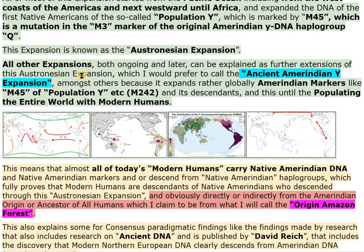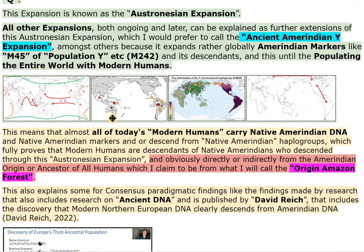All other expansions, both ongoing and later, can be explained as further extensions of this Austronesian Expansion, which I would prefer to call the Ancient Amerindian Y Expansion — amongst others, because it expands rather globally Amerindian markers like M45 of Population Y, M242, and its descendants, populating the entire world with modern humans.